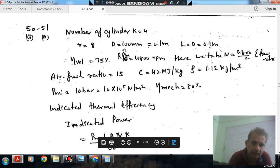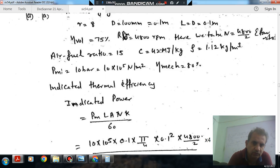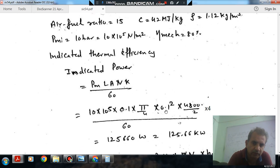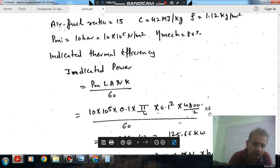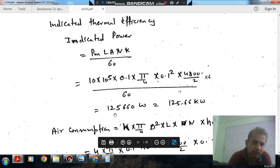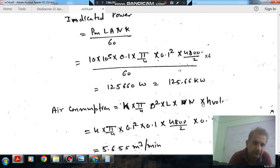N is 4800 by 2 and mean effective pressure is 10 bar. Now, L is the length, so the swept volume will be π/4 × 0.1² × 0.1. N is 4800 by 2 and K number of cylinders is 4, so it will be 125.60 kW or 125.66 kW.